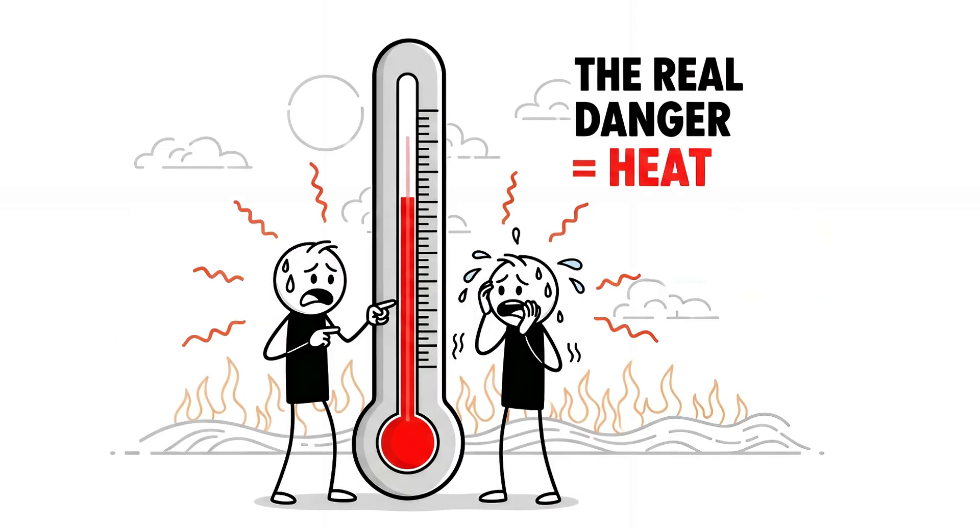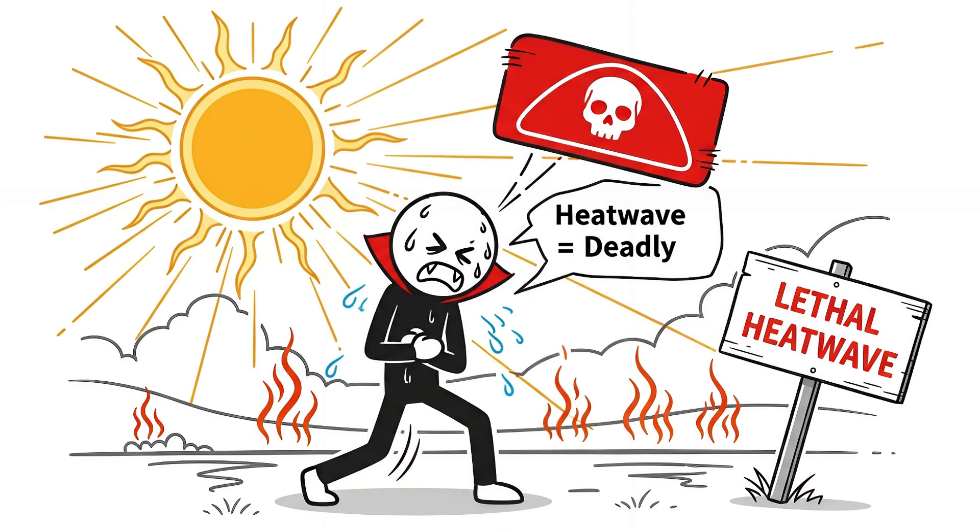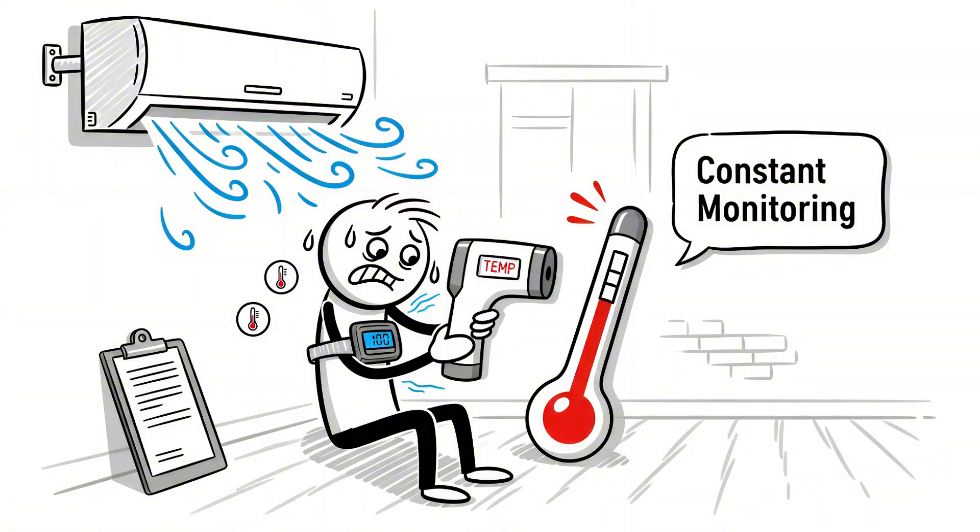On a hot day, your body sweats and cools. Theirs cooks from the inside. They can't regulate temperature. A heatwave isn't uncomfortable. It's lethal. They live in air conditioning, obsessively monitor their core temp, and avoid sunlight like it's trying to kill them. Because it is.